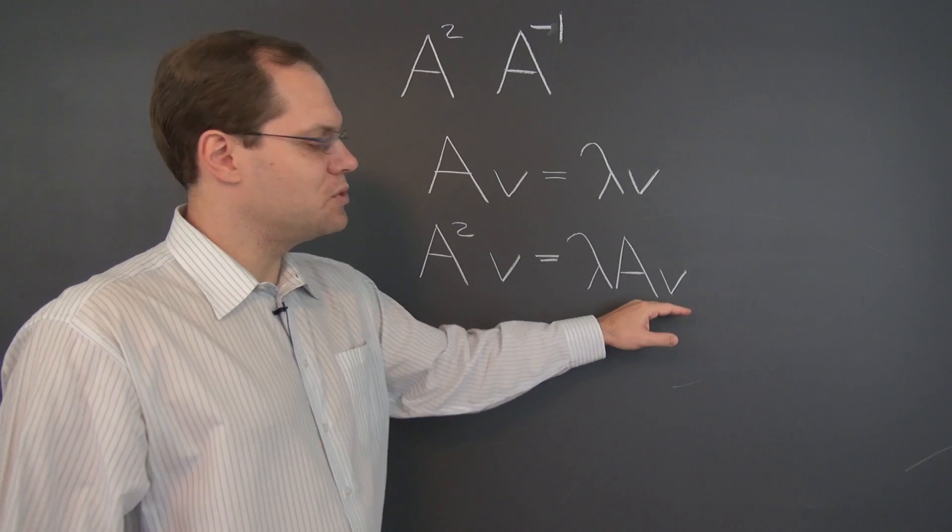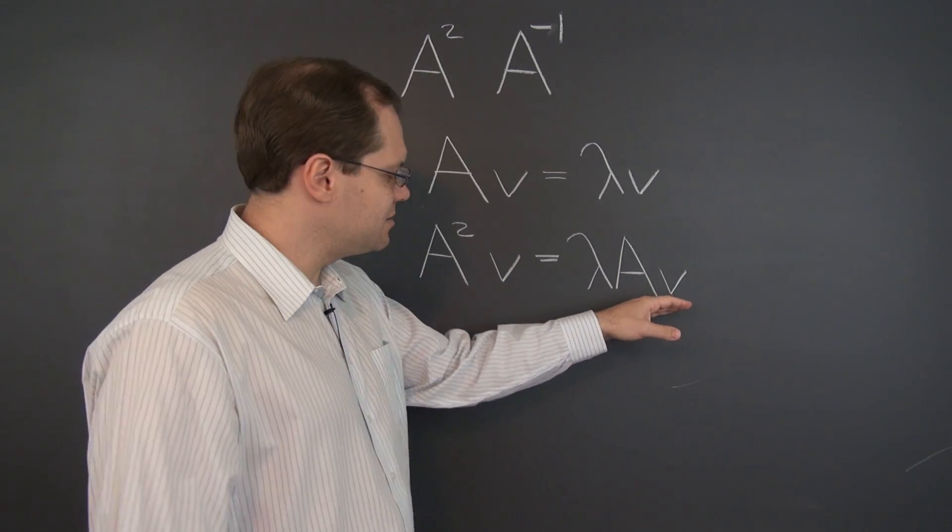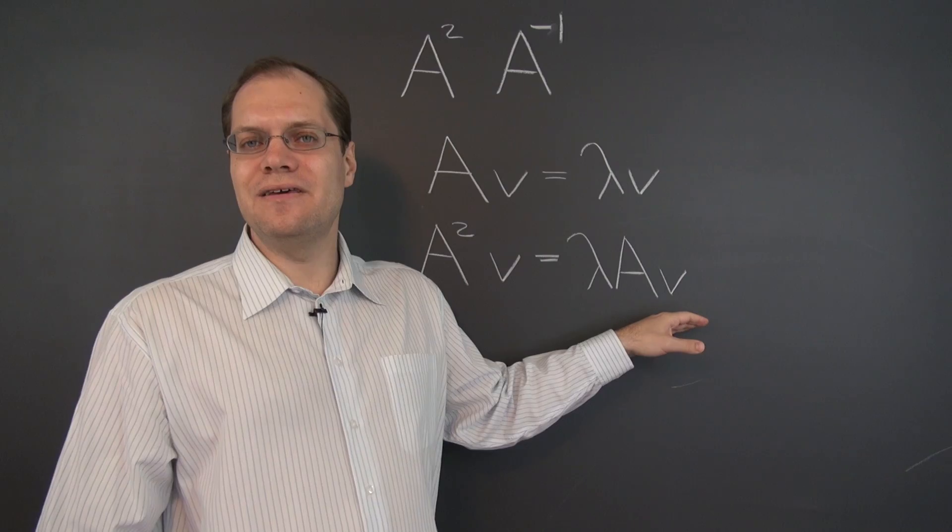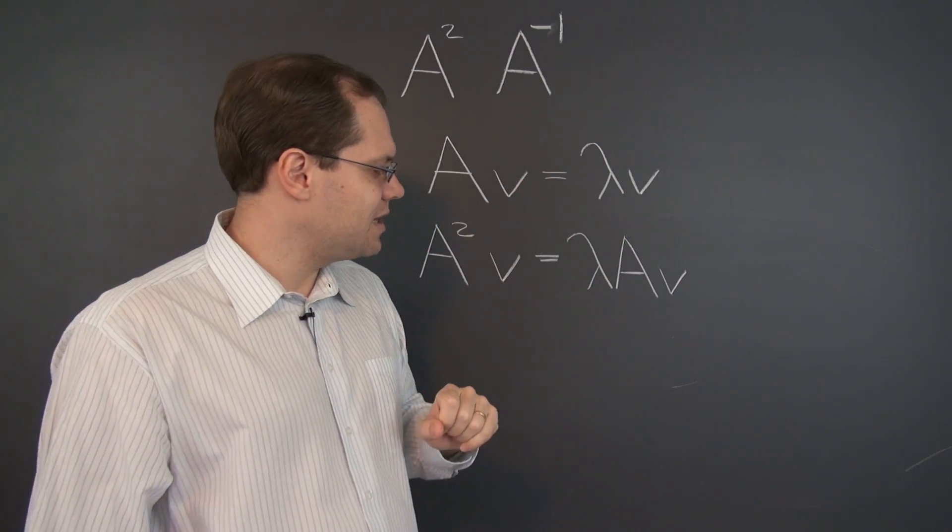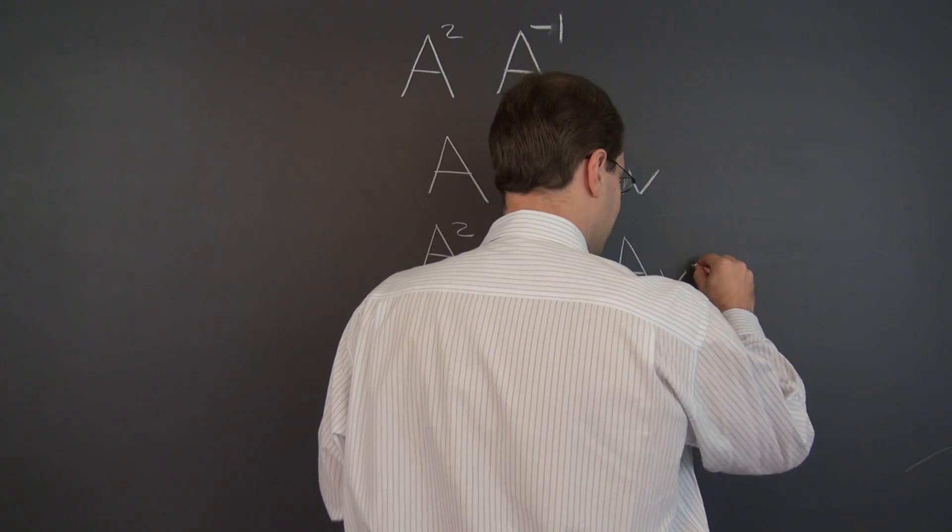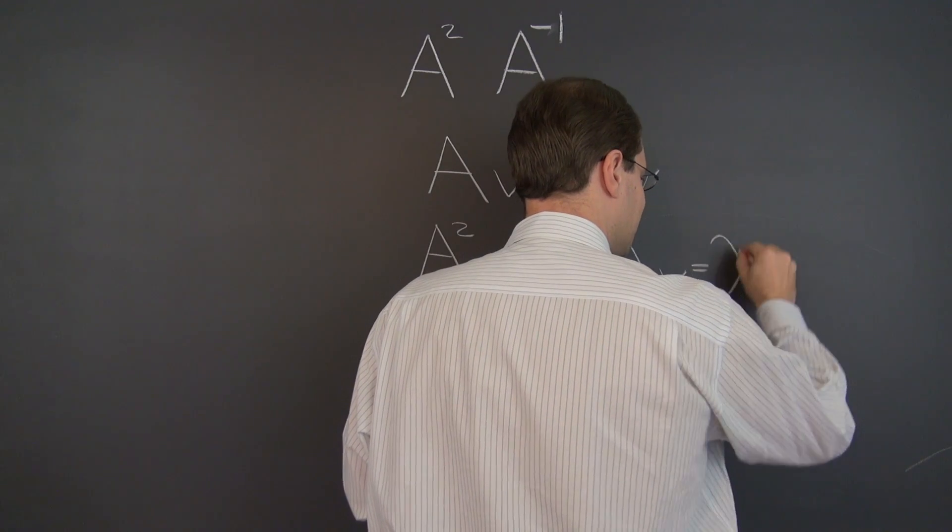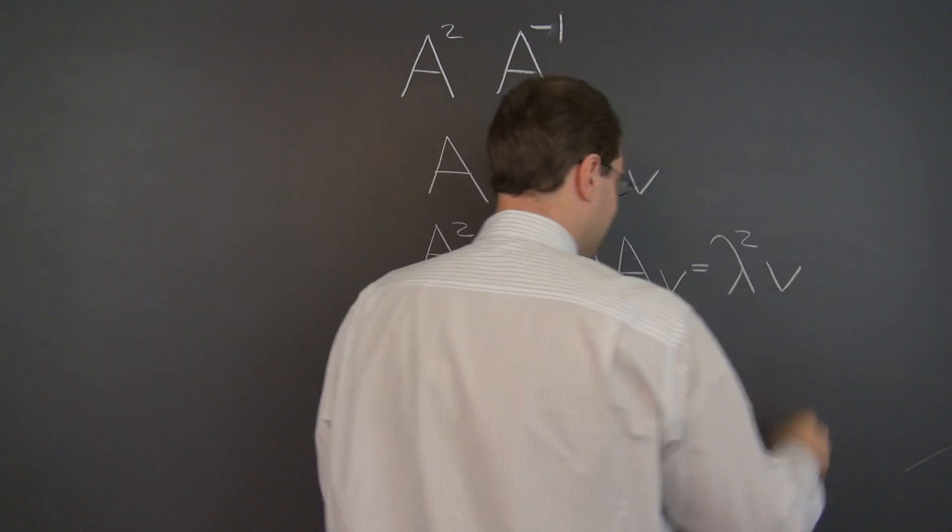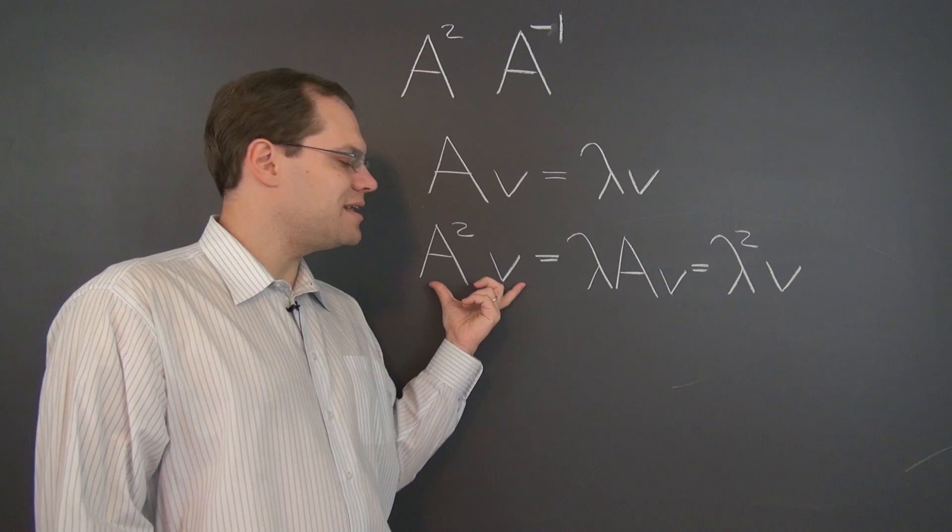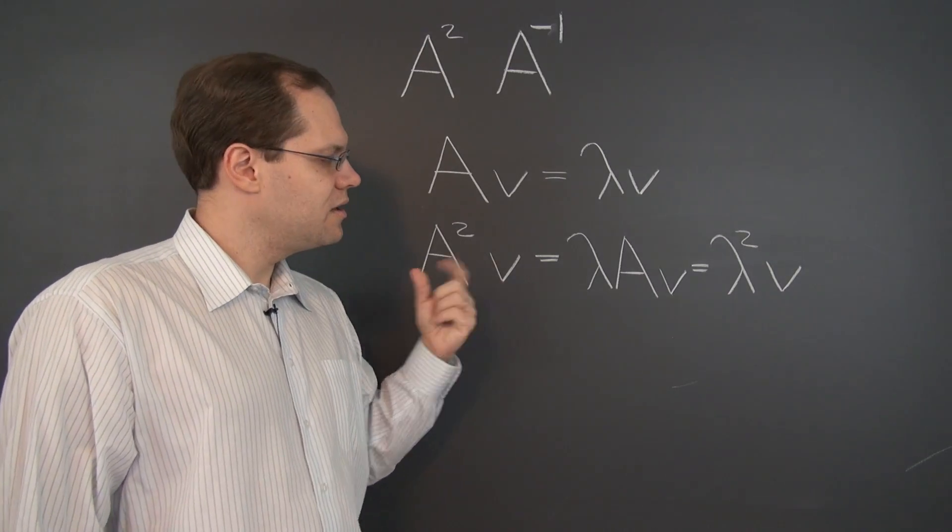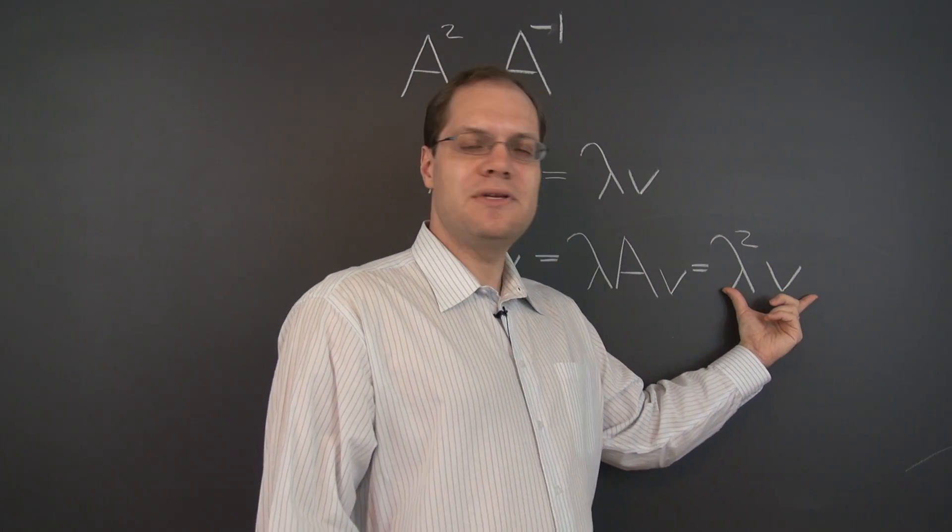And of course we know what A V is. A V is lambda V from the previous line. So the right-hand side is lambda squared V. So what you see is that A squared V equals lambda squared V.